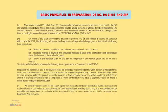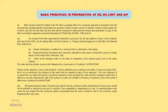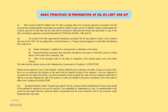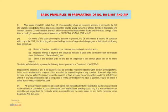After receiving the draft DO details from the GE office, the accepting officer conveys approval in principle for the DO and shall also decide whether the deviation in question shall be a lump sum DO or a measurable DO, in which case the DO will state that the work will be measured in a measurement book. A copy of the letter according approval in principle is forwarded to the CDA, AO, CW and GOPs.